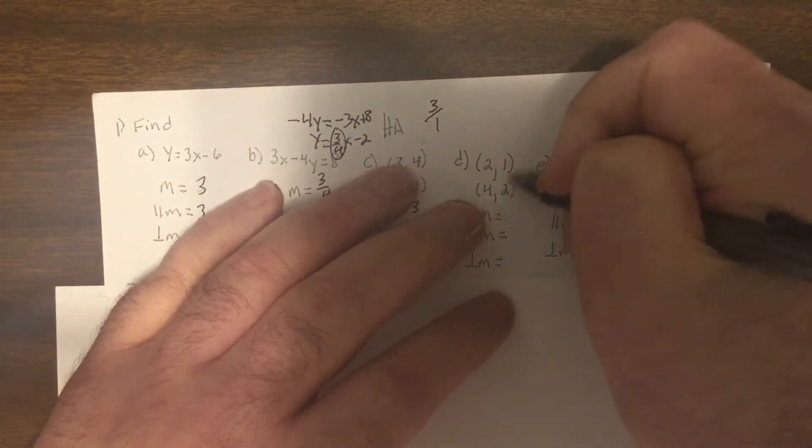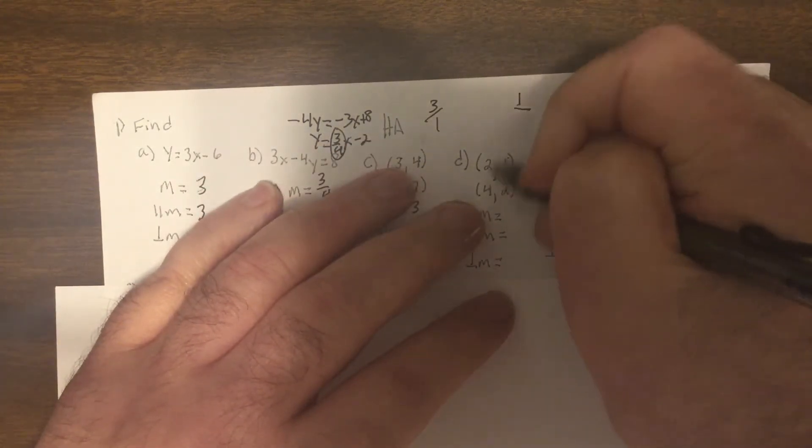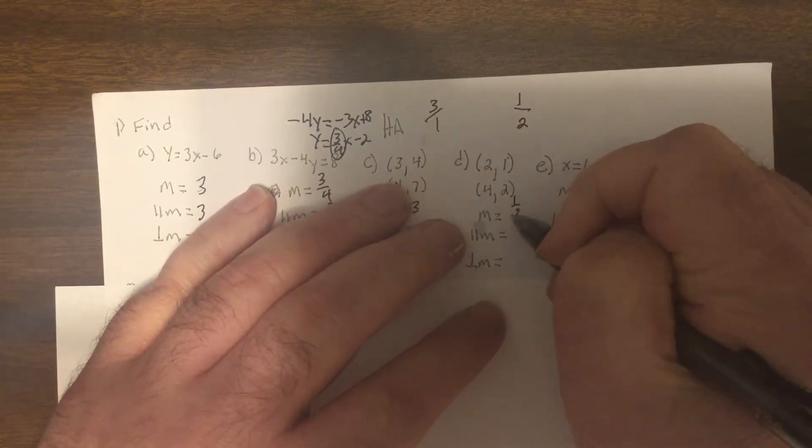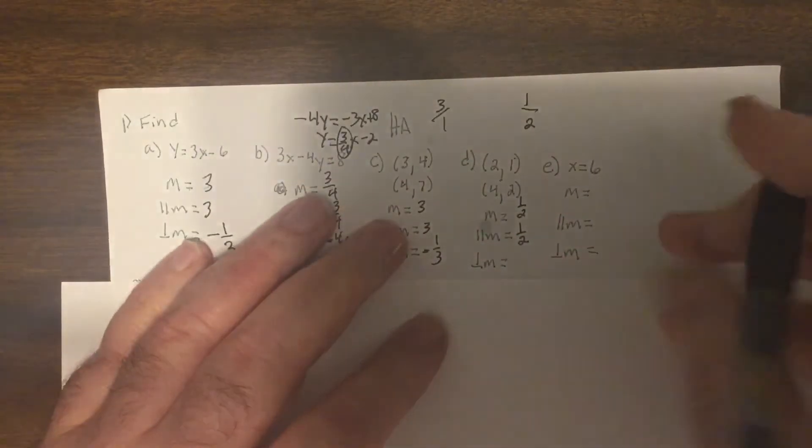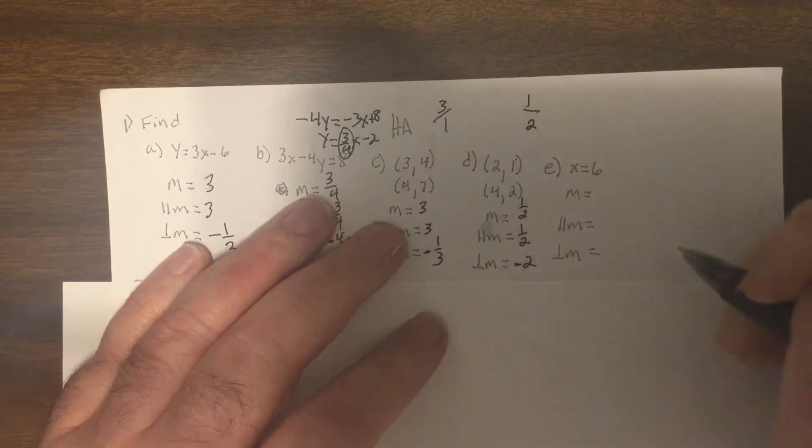So find the slope. 2 minus 1 is 1 over 4 minus 2 is 2. So slope is 1 half. So parallel is the same. Here. Same parallel. So this would be perpendicular is negative 2.